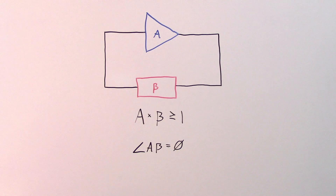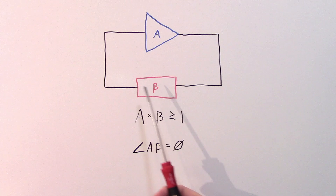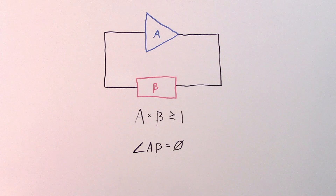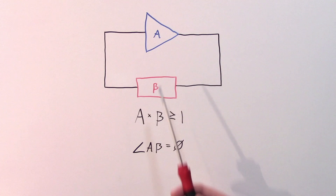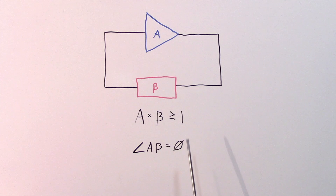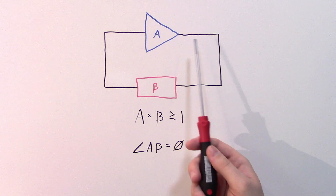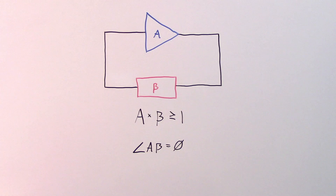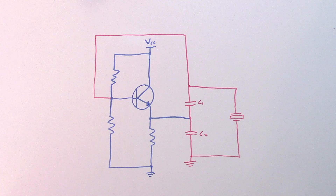Pretty much any oscillator can be broken down into two main sections: an amplifier and a feedback network which feeds the amplifier's output back to its input. This feedback network is usually designed to only feed back signals at a particular frequency. The basic criteria for oscillation is known as the Barkhausen Criterion, which states that the total loop gain — the gain of the amplifier times the gain of the feedback network — has to be greater than or equal to one, and the total phase shift has to be zero. The Colpitts Oscillator is no exception to these rules.